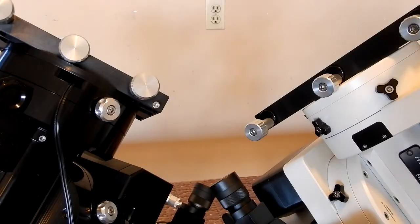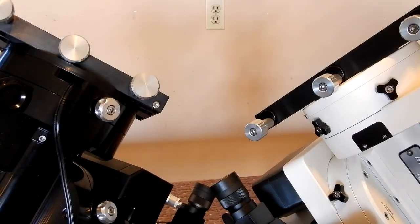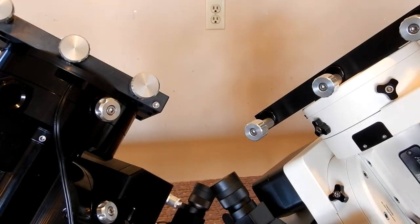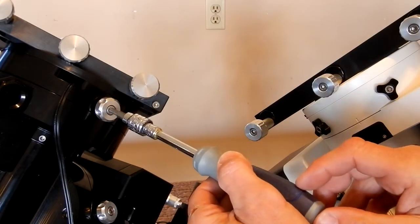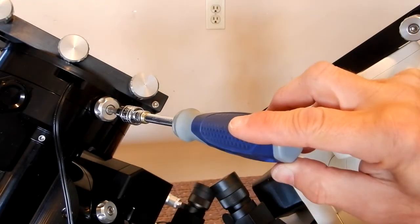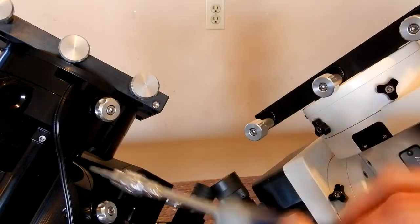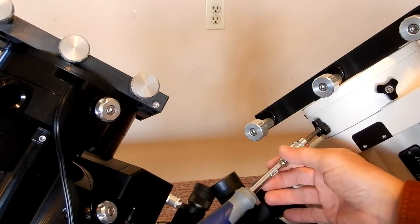Another nice thing is Astrophysics, for a lot of their socket head cap screws, it takes a 3/16 Allen wrench. And so also with the Mach 1 to tighten the clutches, a 3/16 works - same one works for the Mach 2.